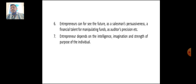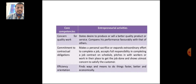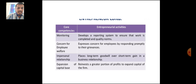Moving further, these are the entrepreneur activities shown in this slide. Please go through these different activities that an entrepreneur has to do. First are initiative activities, then opportunity activities, and information-gathering activities. These include how to do quality work, how to increase efficiency orientation, planning, and problem-solving. Other activities include monitoring, concern for employee welfare, relationships, and how to expand capital — basically how to expand business activities.